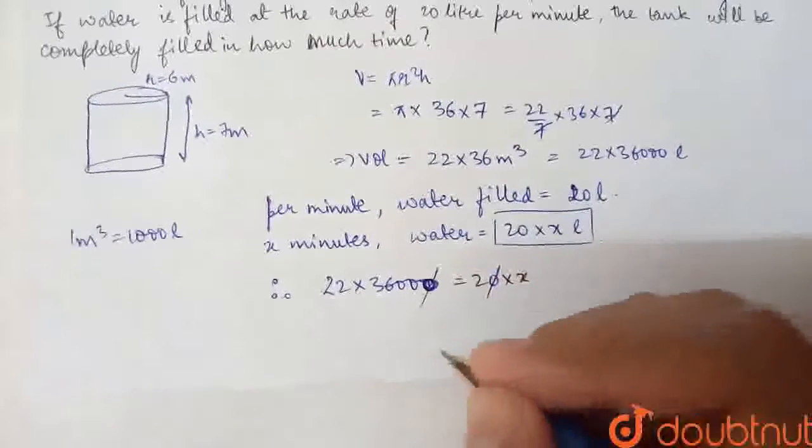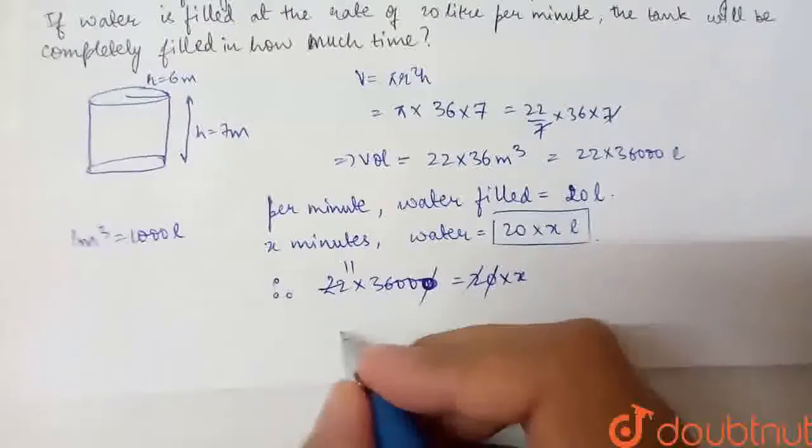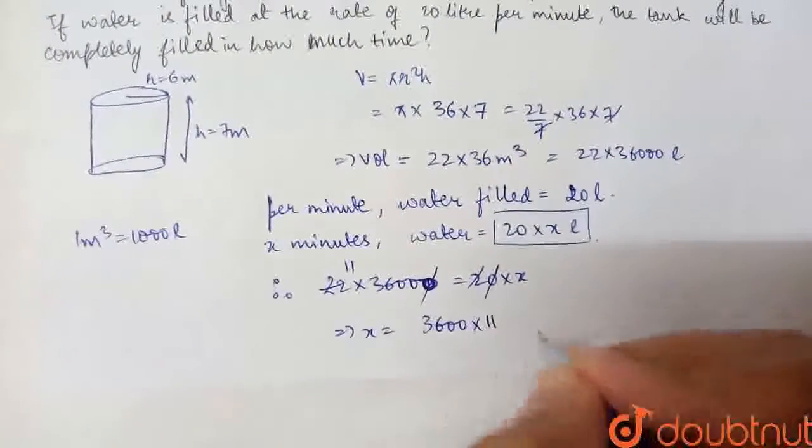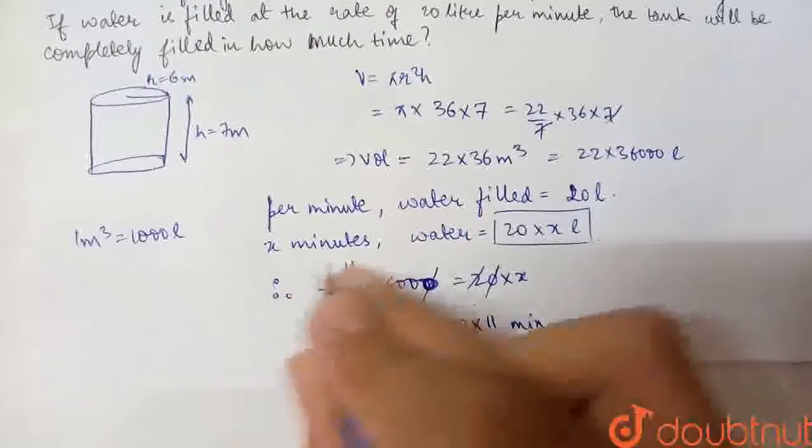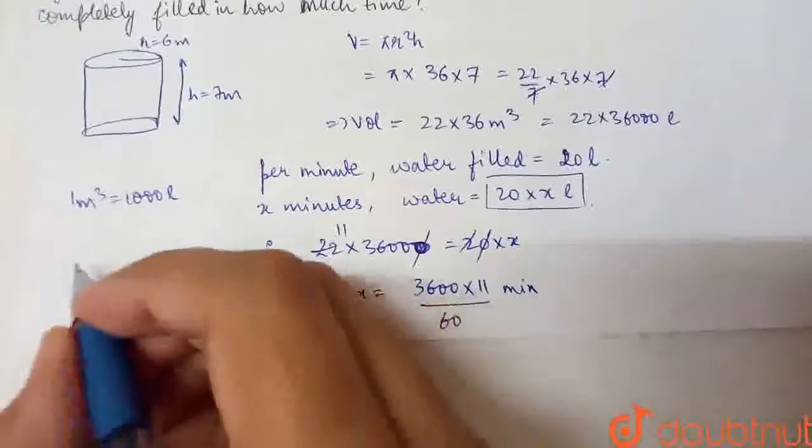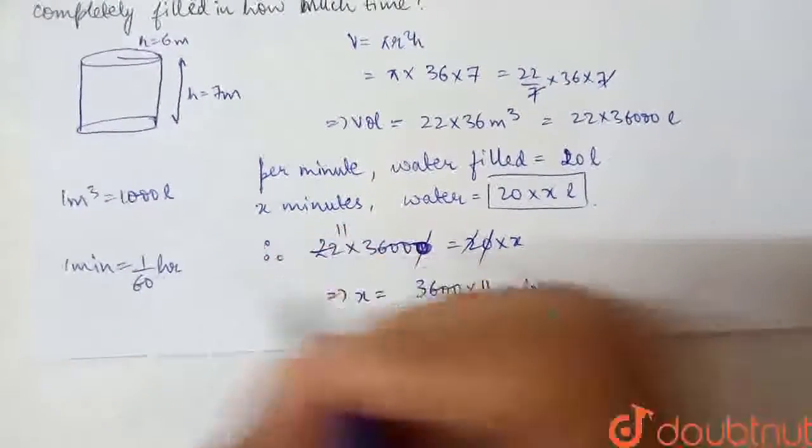So zero and zero cancel out. This comes out to be 11. X comes out to be 3600 divided by 11, and these are my minutes. To convert this, divide by 60. One minute is 1 by 60 hours.